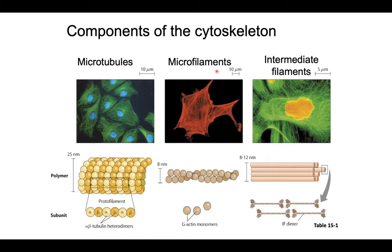We also have microfilaments, also called actin. These are pretty small and extensive throughout the cell, made of monomers called actin. We've seen lots of globular proteins throughout the semester — these will be more structural and filamentous. And then we have our intermediate filaments. These are an intermediate size, named based on their size when people discovered them. They are structural in nature — another tubular shape made of dimers of proteins. So our three different types are: microtubules, microfilaments or actin, and intermediate filaments.